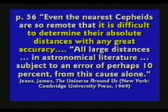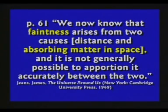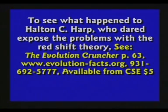An article about stars being much younger than thought — a Cambridge University researcher said even the nearest Cepheids are so remote it's difficult to determine their absolute distance with any great accuracy. All large distances in astronomical literature are subject to an error of perhaps 10% from this cause alone. He said faintness arises from two causes — distance and absorbing matter in space — and it's generally not possible to apportion it between the two.